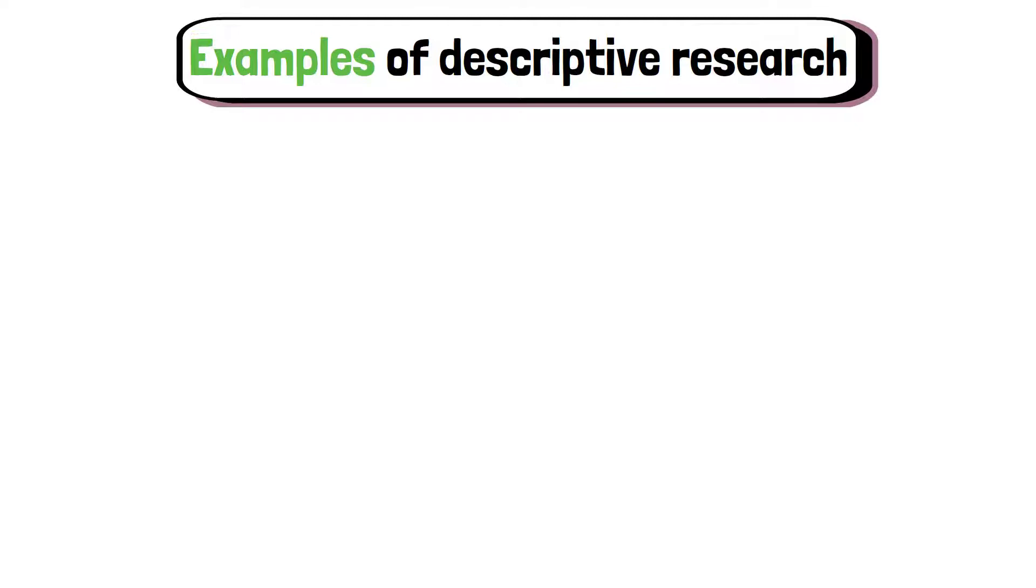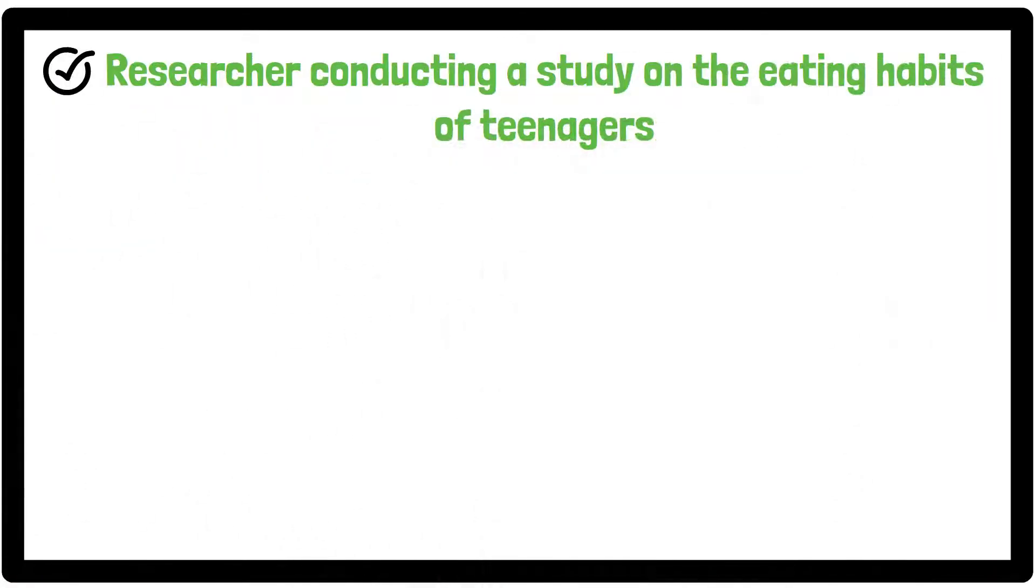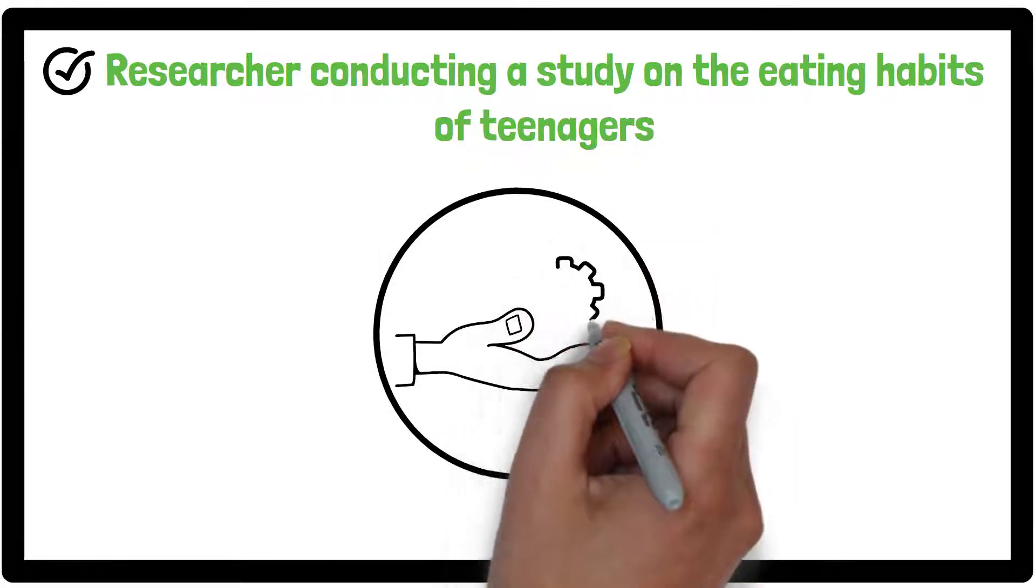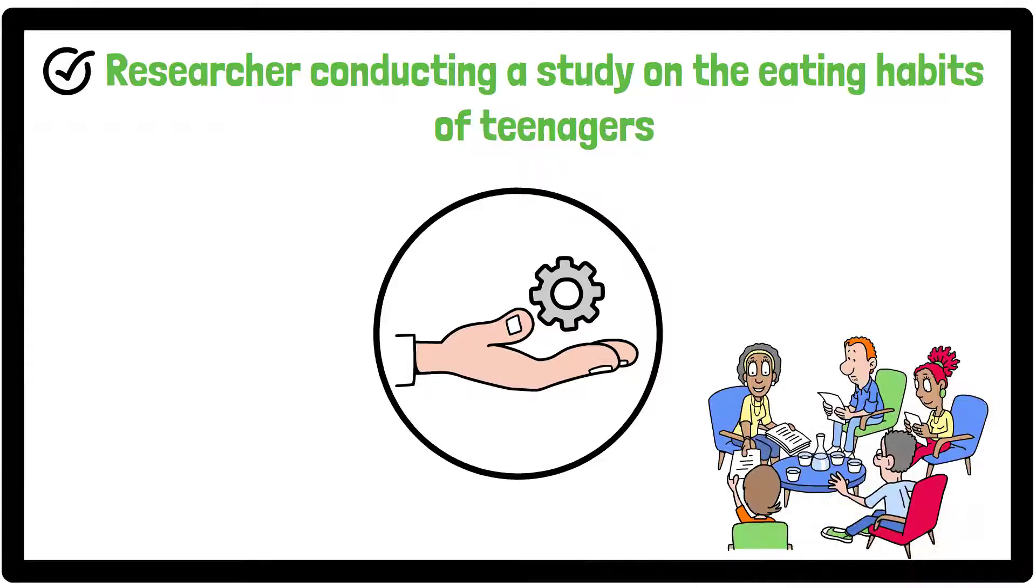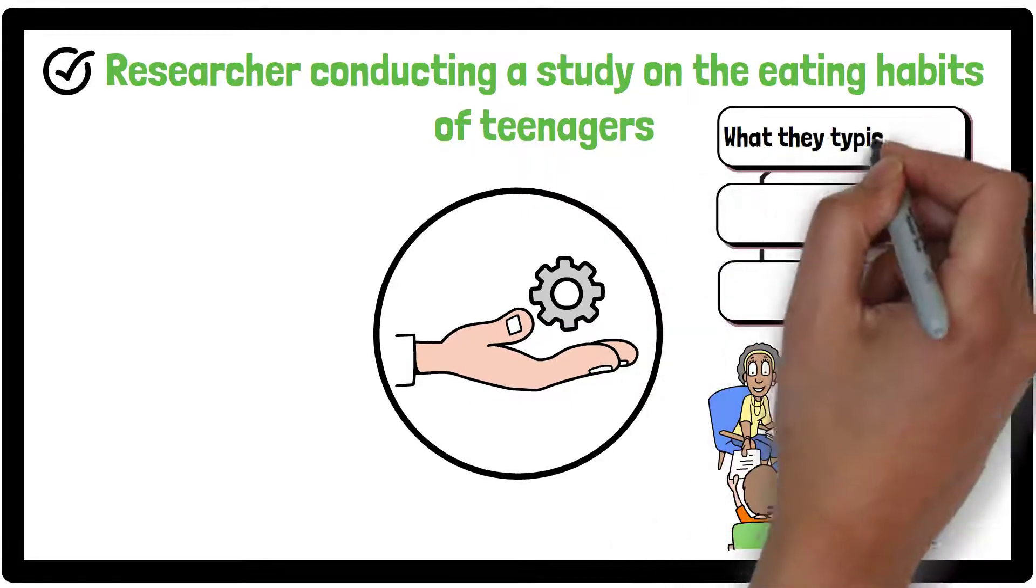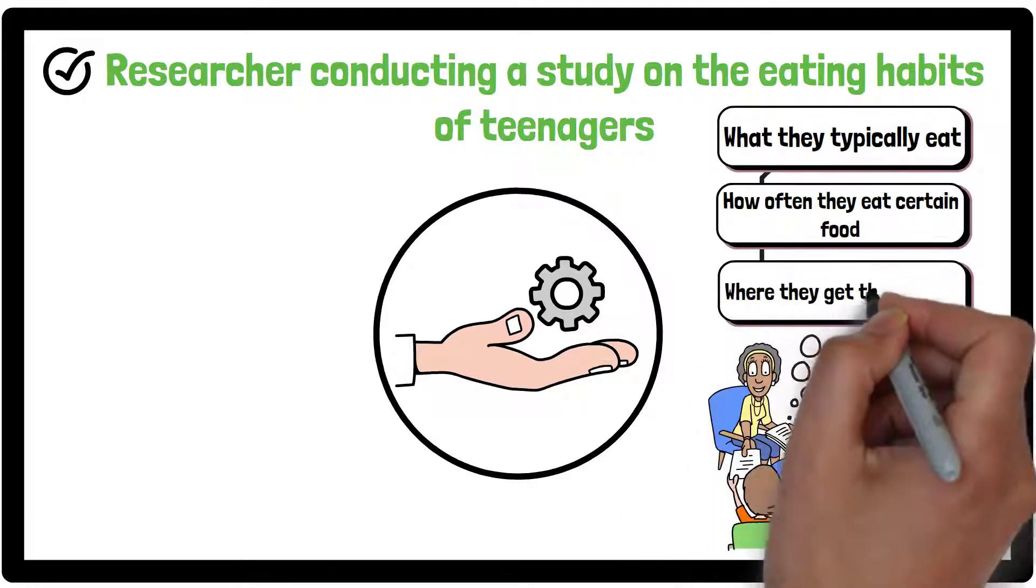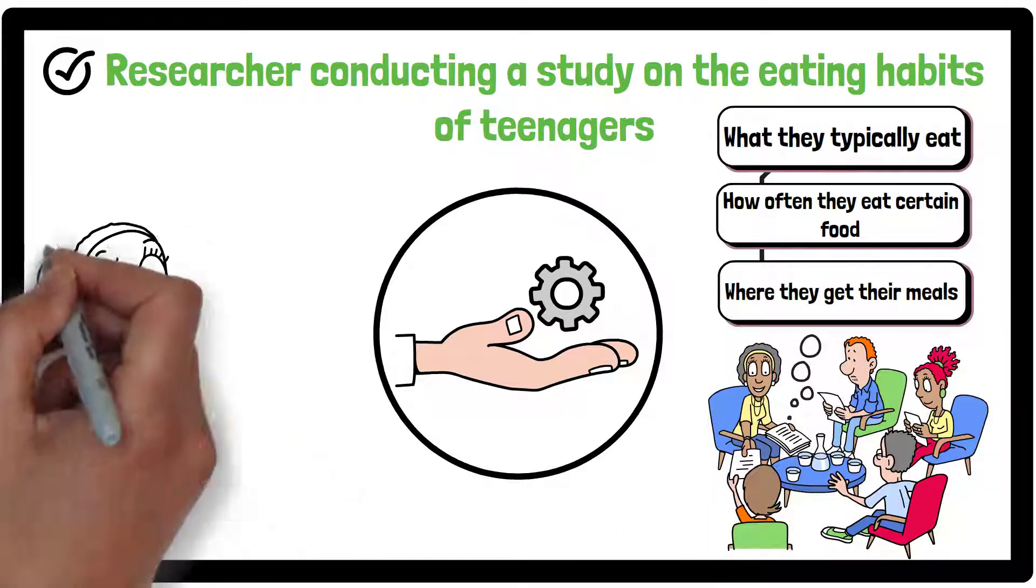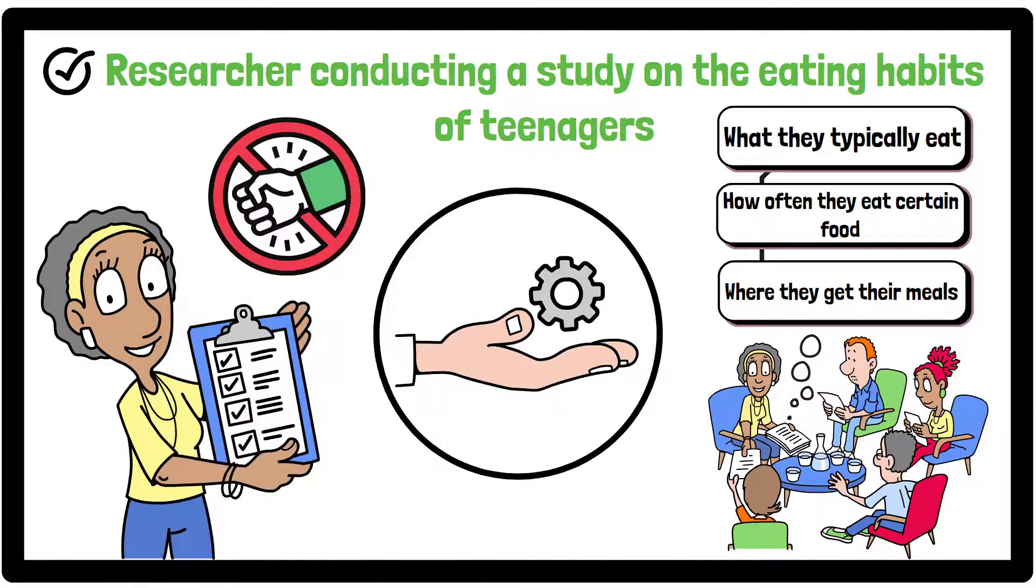Now let's look at some examples to illustrate this. Imagine a researcher conducting a study on the eating habits of teenagers. Instead of testing any interventions or controlling variables, the researcher might simply distribute a survey asking teenagers about what they typically eat, how often they eat certain foods, and where they get their meals. This provides a comprehensive overview of teenage eating behaviors without attempting to influence them.